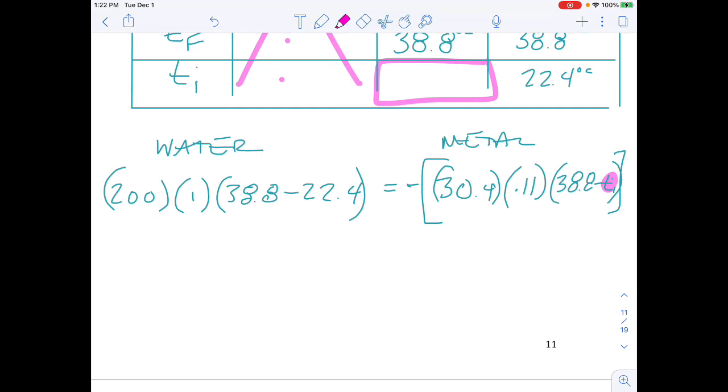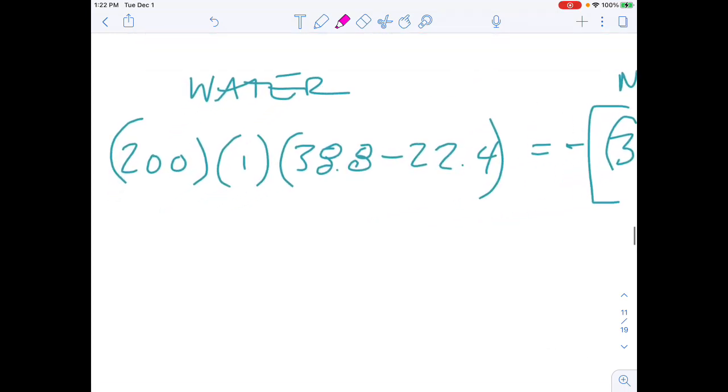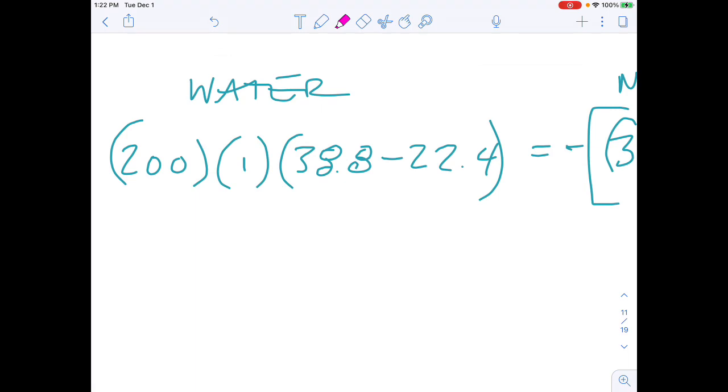So now let's go through and do some of the math. What I can do, I can start on this side. I can do what's in the parentheses, and I get 16.4. I can then multiply it by 200 times 1, so I'd get 3,280. And that is all I can do on that side.